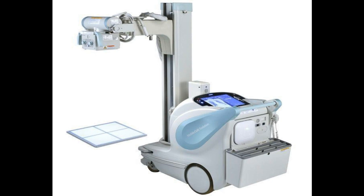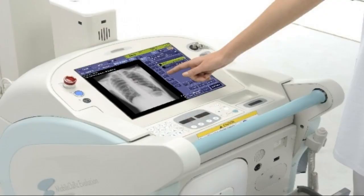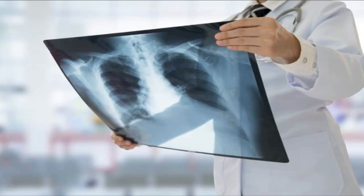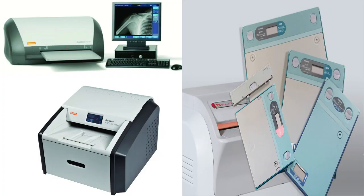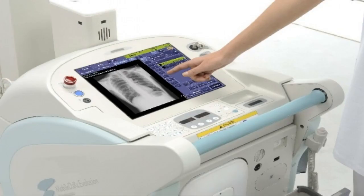Modern mobile X-ray machines use digital detectors that convert X-rays into digital signals for immediate display on a computer screen. In the past, X-ray film and a cassette system were used, but digital detectors have largely replaced this technology.